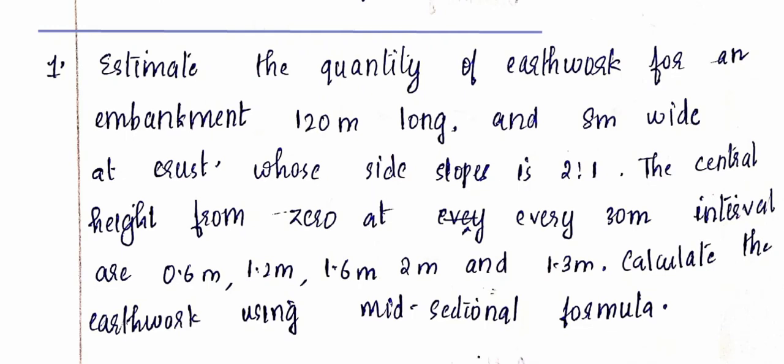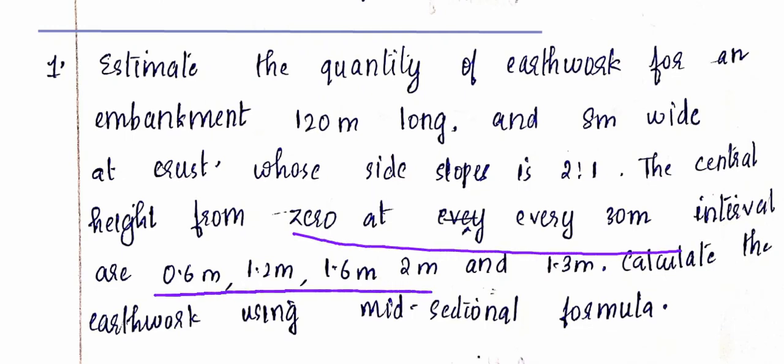The ground surface and road level are at different elevations. The difference between the ground level and the road surface level gives the central height. At every 30-meter interval, the central heights are 0.6, 1.2, 1.6, 2.0, and 1.3 meters.